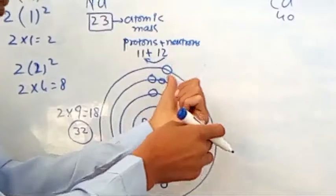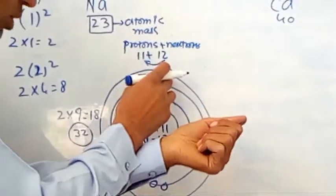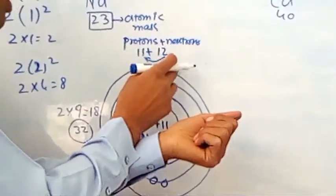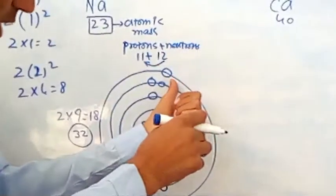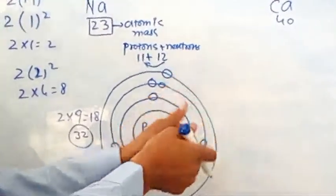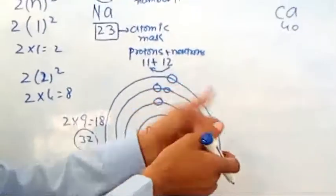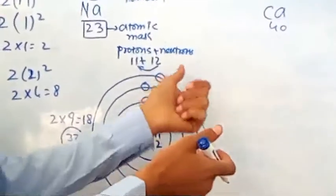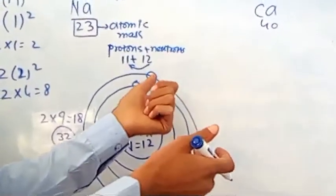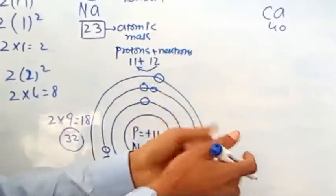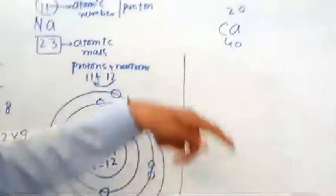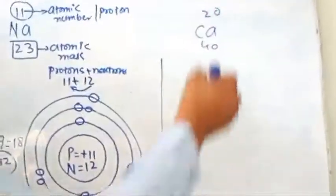The outermost shell electrons represent the group number of the atom. Sodium is in the first group because it has only 1 electron in its outermost shell. Potassium and lithium also have 1 electron in their outermost shell because these atoms are all present in the first group. Now we will make the structure of the calcium atom.